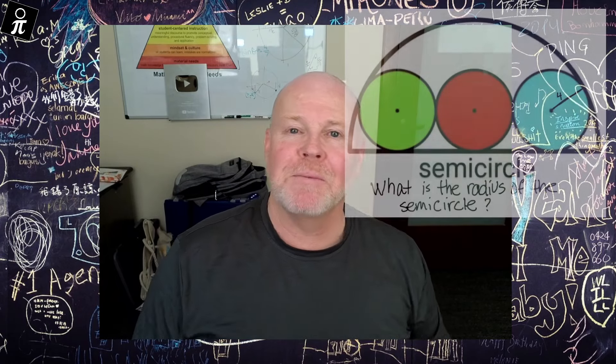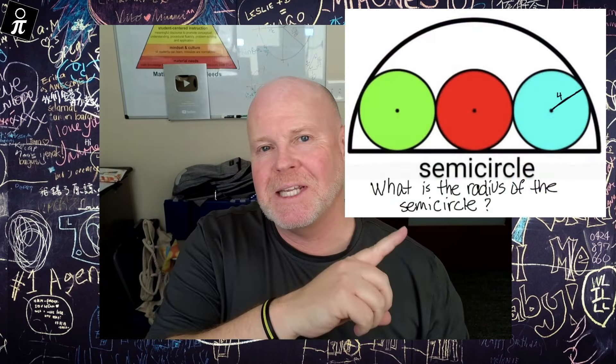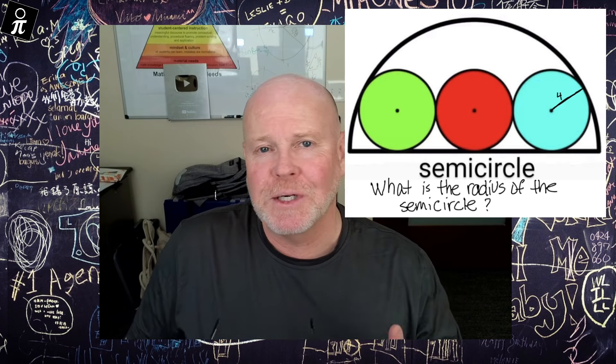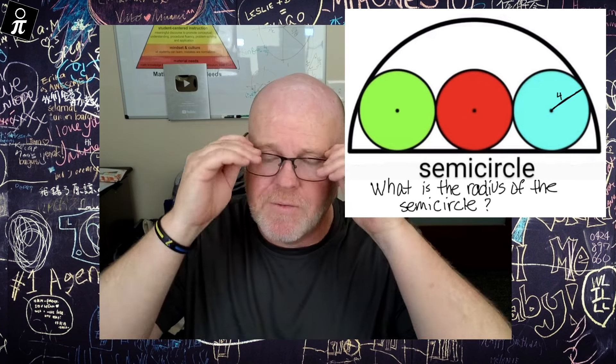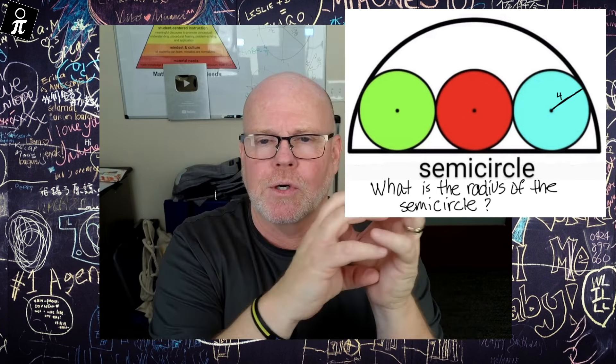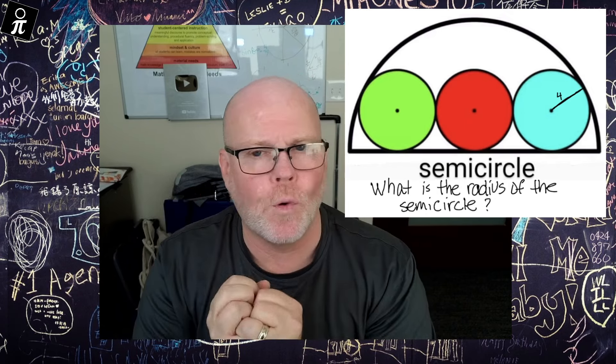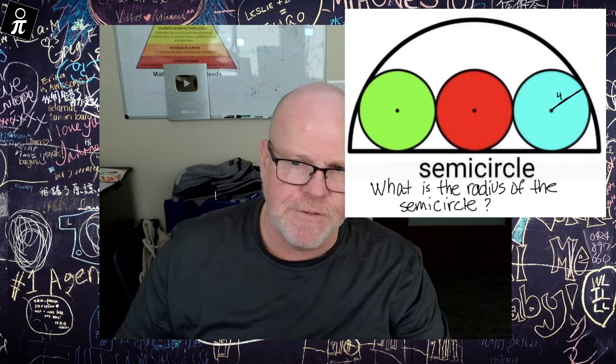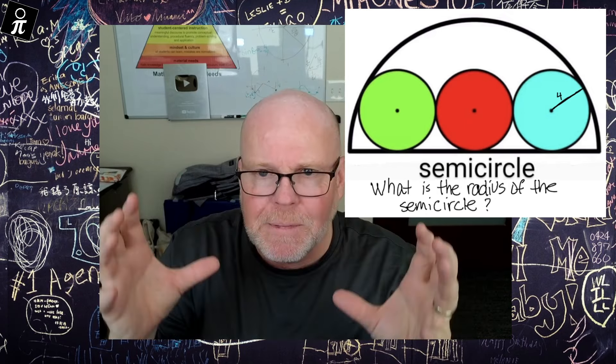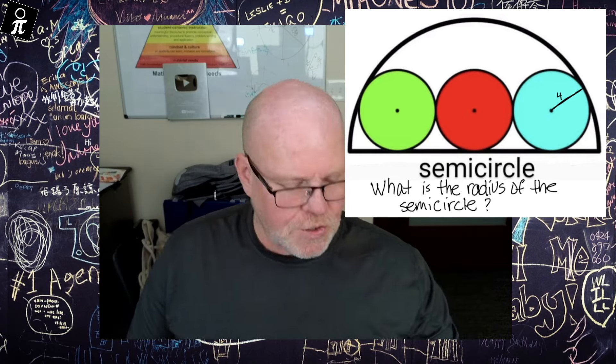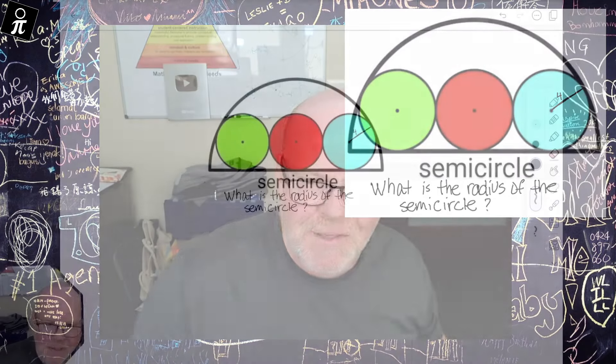Alright, in this video I am going to solve this problem that I found on Twitter. We have three identical circles, each with a radius of four, and our job is to find the radius of the semicircle that encloses those three circles. So let's get started on this.